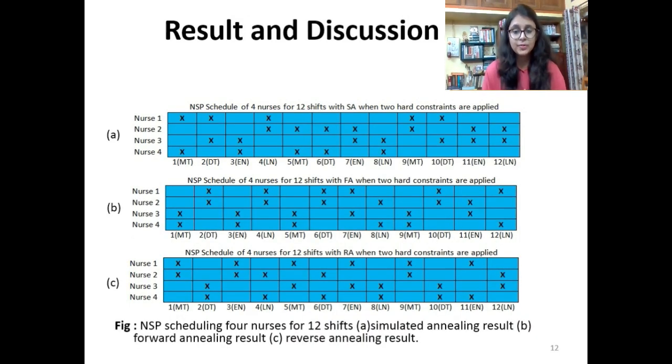Now we will talk about the results from the QUBO model of our nurse scheduling problem. Each shift cannot have more than two nurses so that overcrowding can be prevented. Secondly, each nurse cannot do more than two shifts per day so that they do not get fatigued. Now these two hard constraints have been maintained and the QUBO model has been obtained and the results are given as follows. We can say that reverse annealing gives us the most satisfactory results out of all the processes.